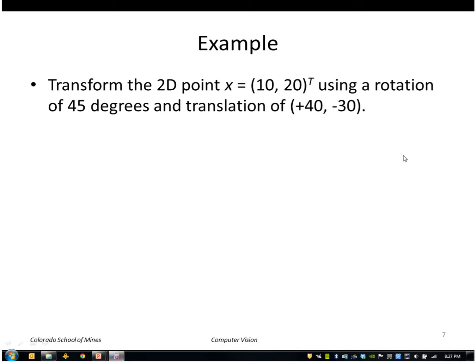Let's do an example of a two-dimensional transformation. We'll transform the two-dimensional point X, given by coordinates 10, 20, using a rotation of 45 degrees and a translation of 40 and minus 30.